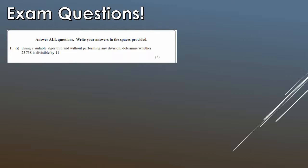So let's have a look at a couple of exam questions. This was taken off the spec paper, the AS paper. You have to use a suitable algorithm, and without performing any division, determine whether 23738 is divisible by 11. So they always say this, use a suitable algorithm. This just means use the rules that you know, and without performing any division. So they don't want you to put this in on your calculator and get an integer.